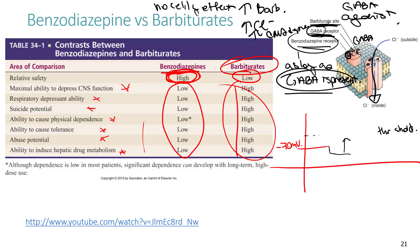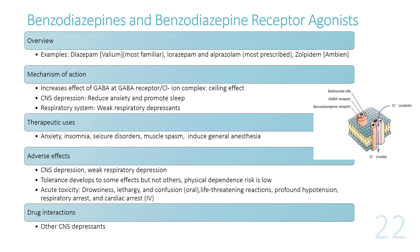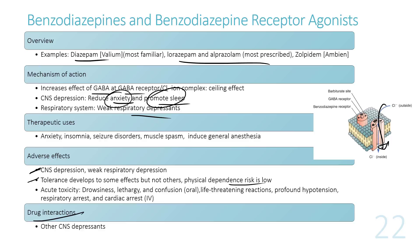Benzodiazepines bind to an allosteric site separate from the GABA receptor, increasing the likelihood that GABA will bind and the chloride ion channel will open. Benzodiazepines only work when GABA is present, giving them a ceiling effect. Barbiturates act as GABA agonists — binding to their site mimics GABA, directly opening the chloride channel, so increasing the dose increases CNS depression without a ceiling effect, enabling fatal overdose.